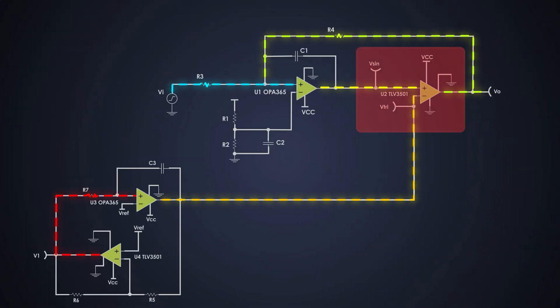Finally, we use a comparator to compare the error amplifier's output, which we call Vsin, with the triangular wave from the previous block. The comparator logic is simple. If Vsin is greater than the triangular wave at any point, the output is high, otherwise it's low.